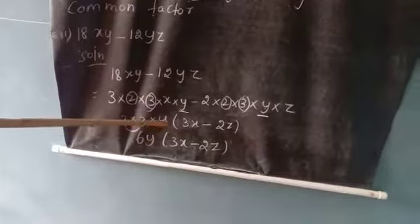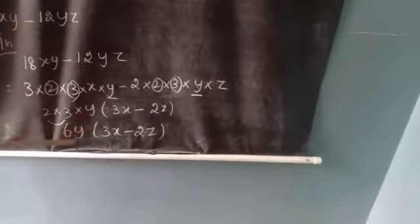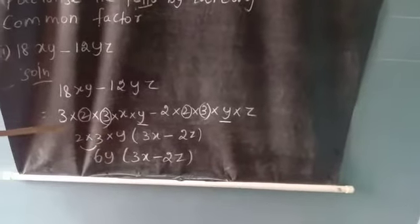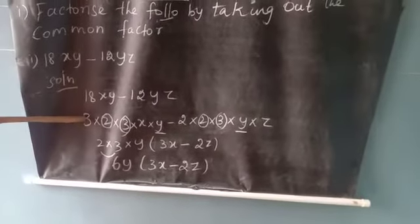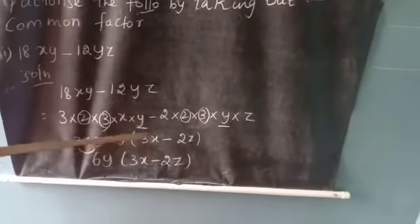So 2 × 3 × y is the common one. 2 × 3 is 6 and y, so 6y. When 6y is taken out, what is the balance in the first term? 3 × x, so 3x.